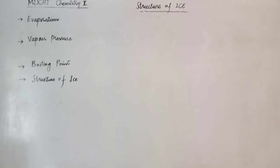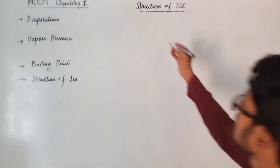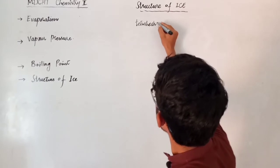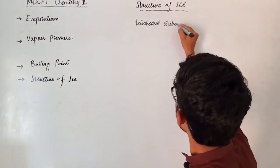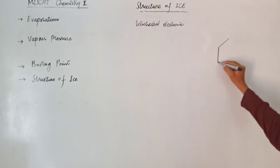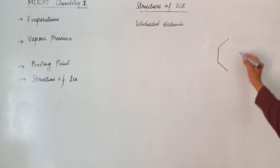Students, let's talk about the structure of ice. You know that ice is a solid form of water. This is a tetrahedral structure. If I try to draw it, you don't need to draw it in full detail. Just know that this structure can be drawn out, okay?